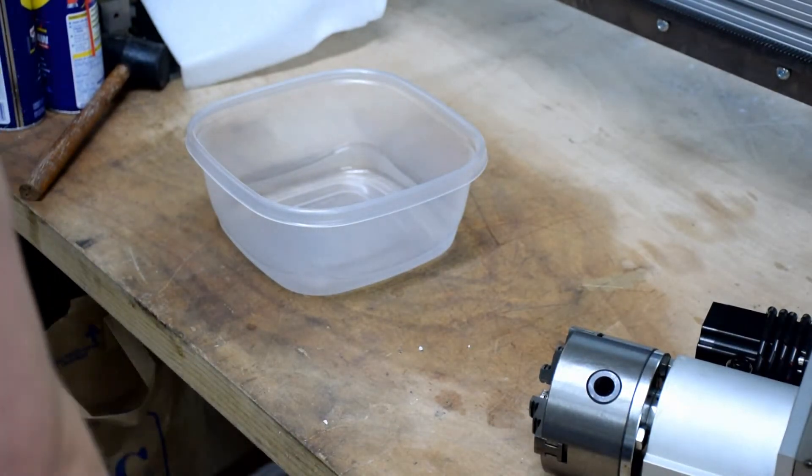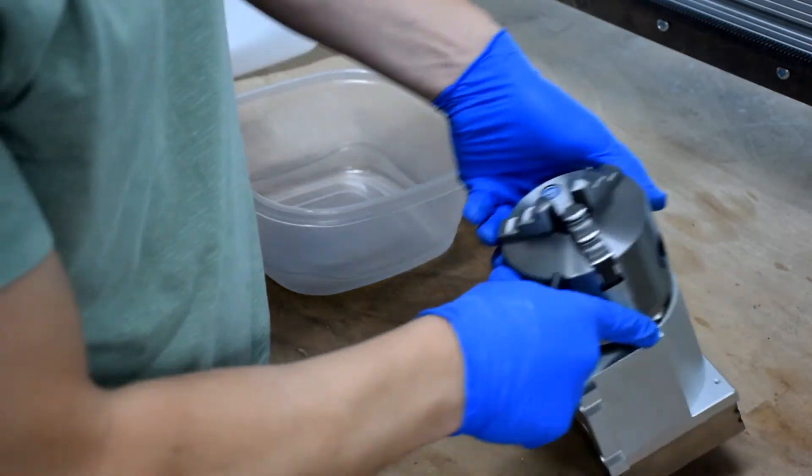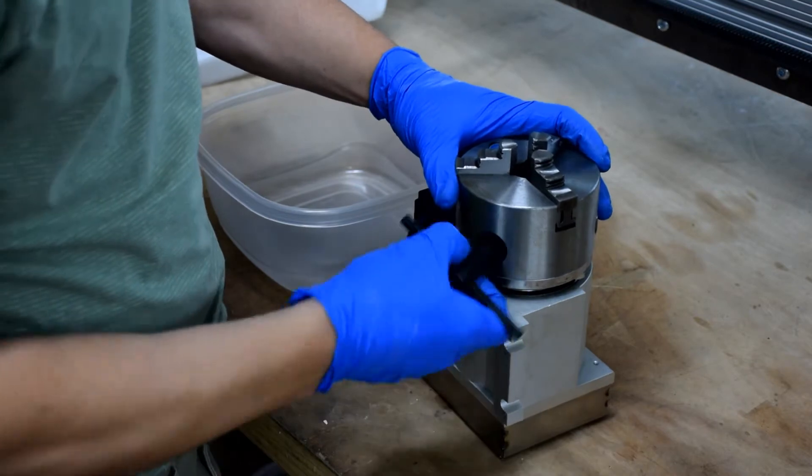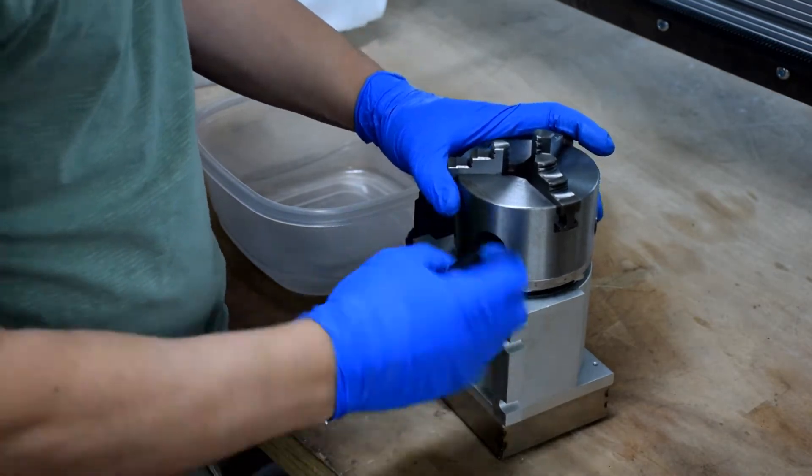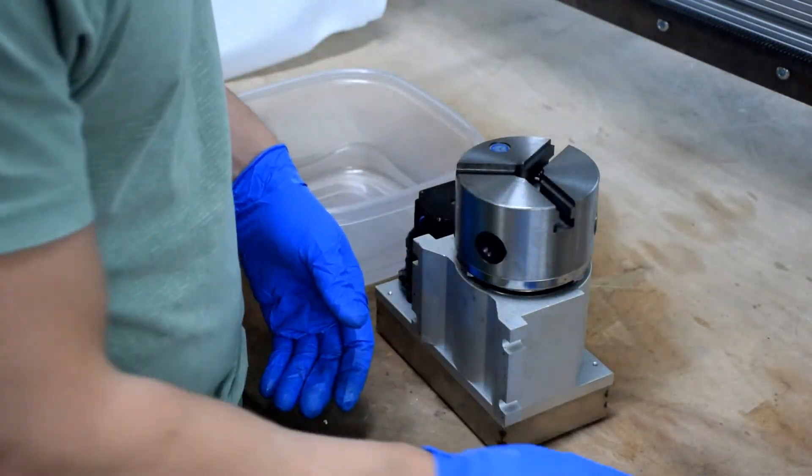The first thing we need to do is remove the jaws from the chuck. This is pretty easy. Just loosen the jaws until they disengage from the chuck and pop them out. The jaws do have an order that they go back into the chuck, but don't worry, they are numbered.